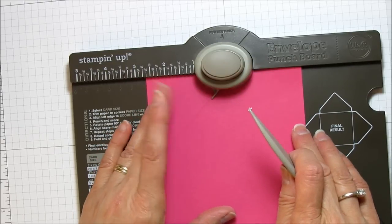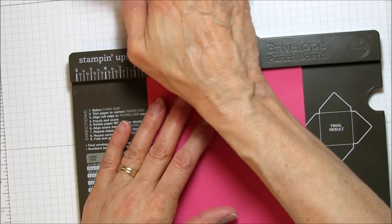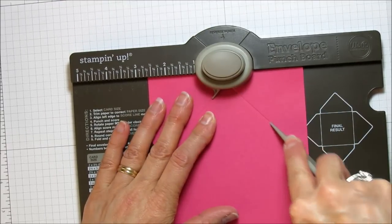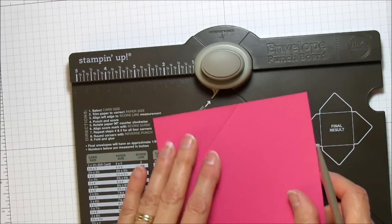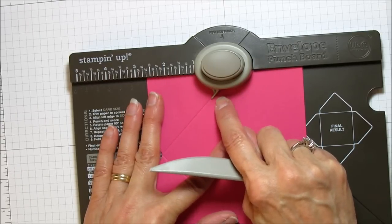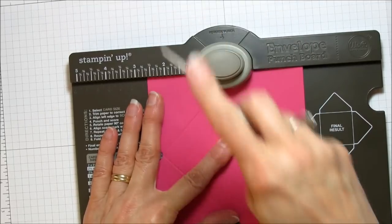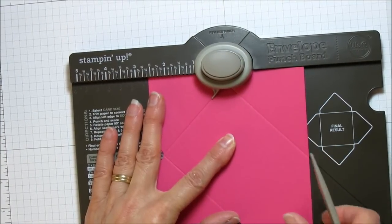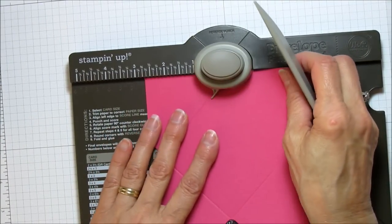You'll line it up with this little point right here. So now all you're doing is you're going to punch again and score, then you turn it again and follow this next line and line it up with this little point again here. Punch and score, and the same for this side.